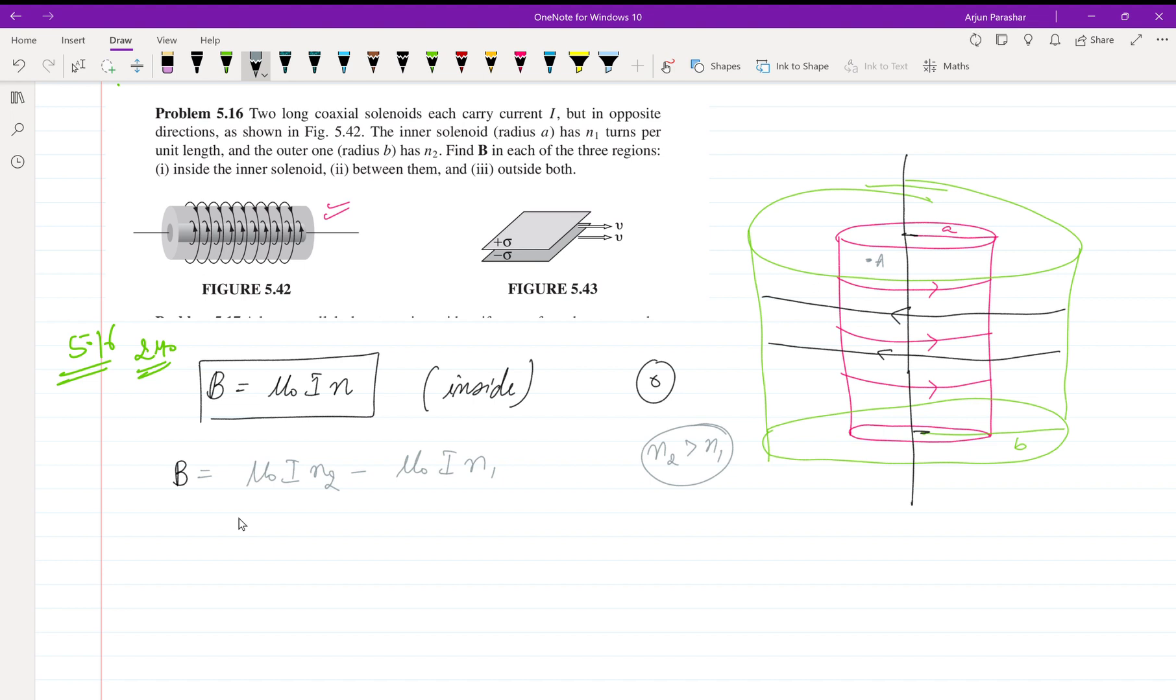Let us calculate the direction of magnetic field first. If we place our fingers here for the inner solenoid, it is going in the positive z direction. For the outer, it is going in the negative direction, so I need to add the negative sign because of the direction of magnetic field.